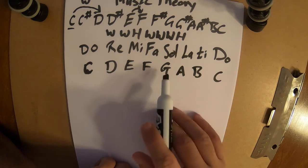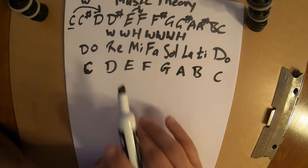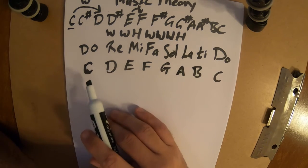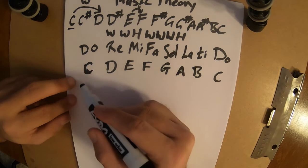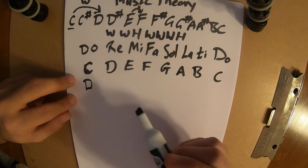So that's our C scale. That'll sound Do, Re, Mi, Fa, Sol, La, Ti, Do if we're starting on C and C is Do.